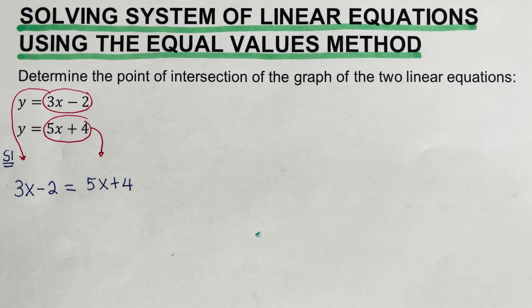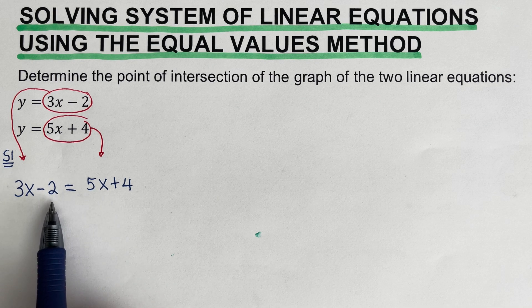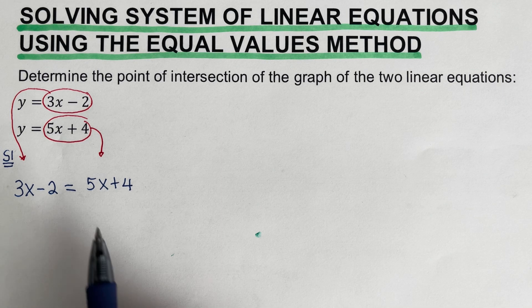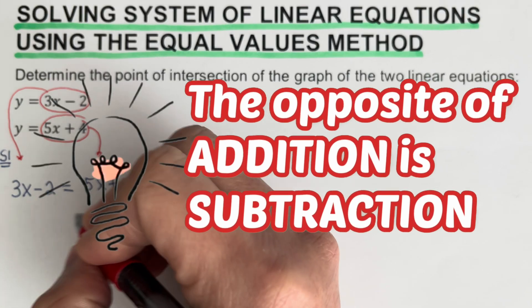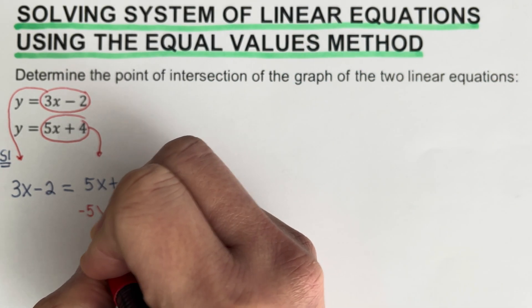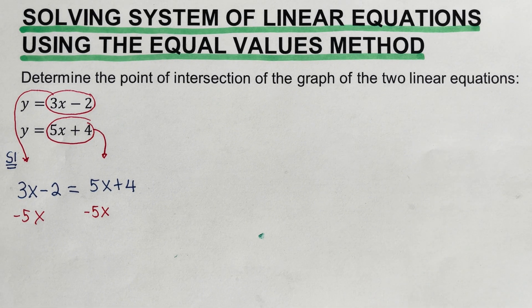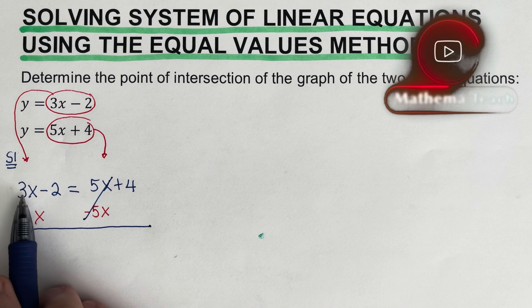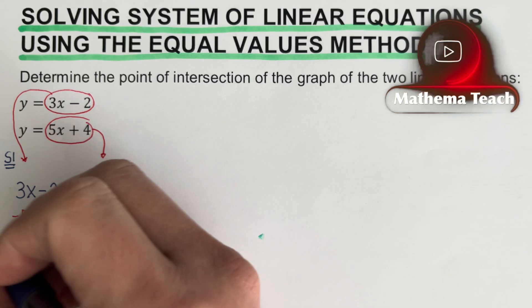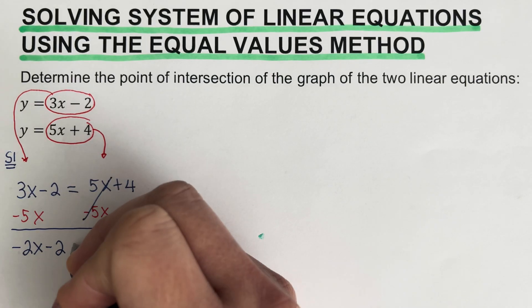Part of this step is to solve for x. We need to make sure that x is isolated on one side. We have a positive 5x here, and since the opposite of addition is subtraction, I'm going to subtract 5x from both sides. So 3x minus 5x gives us negative 2x, and we bring down the negative 2.